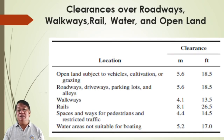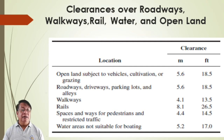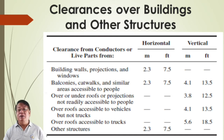Clearance over roadways, walkways, rail, water, and open land: for railways, not less than 8.1 meters; space for pedestrians with restricted traffic — 4.4 meters; water areas not suitable for boating — 5.2 meters. Clearances over buildings and other structures include horizontal clearances for building walls, projections, and windows, and vertical clearances as well.